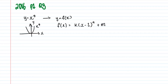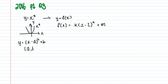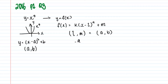This part is actually straightforward — it goes back to how you find the minimum point of a quadratic. For example, for y = (x - a)² + b, you know the turning point is (a, b). Likewise, for this equation, you simply take l and m as the x and y coordinates of the turning point, which equals (a, b). So l = a and m = b.